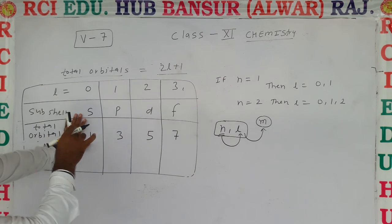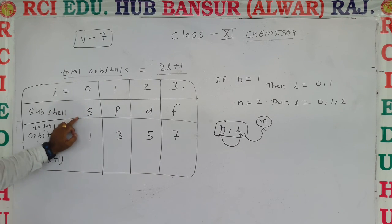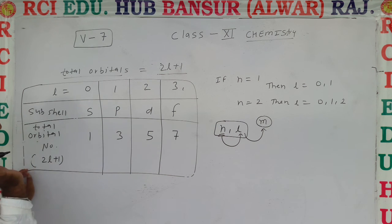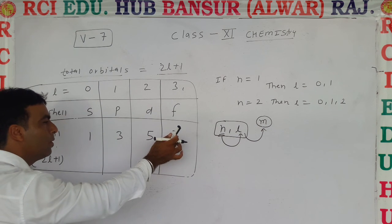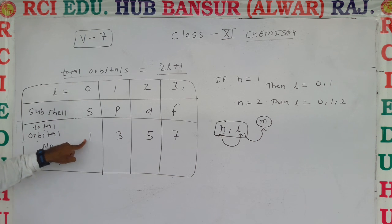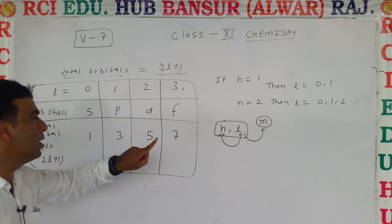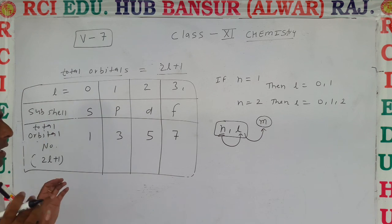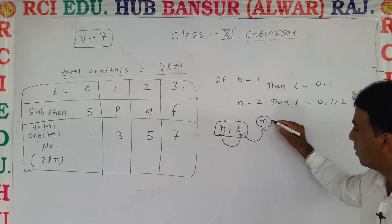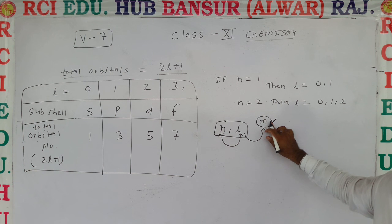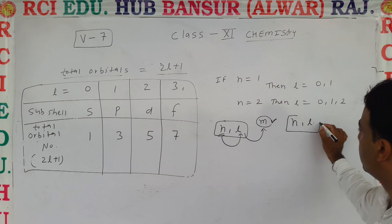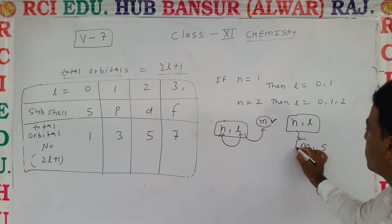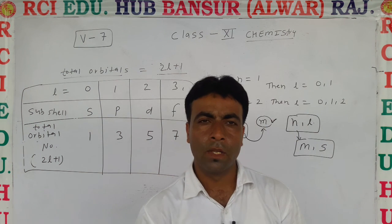So in this part you can see the features and importance of l. To summarize: s sub-cell has only one orbital, p has three orbitals, d has five orbitals, and f has seven orbitals — always constant, one, three, five, seven according to l values. In the next video we will see the third quantum number — the magnetic orbital quantum number — and discuss m and s quantum numbers. Thank you for today.